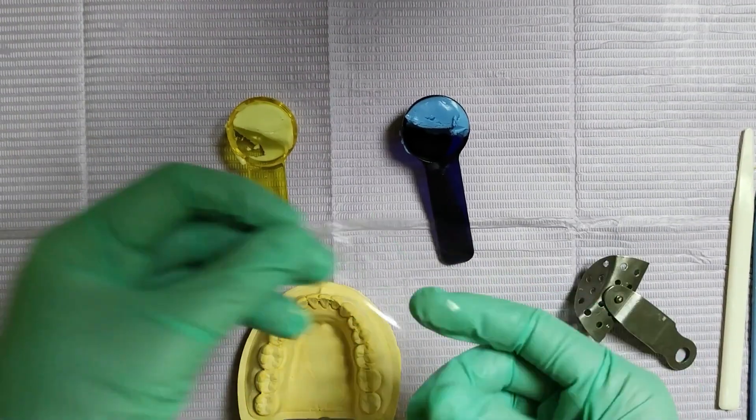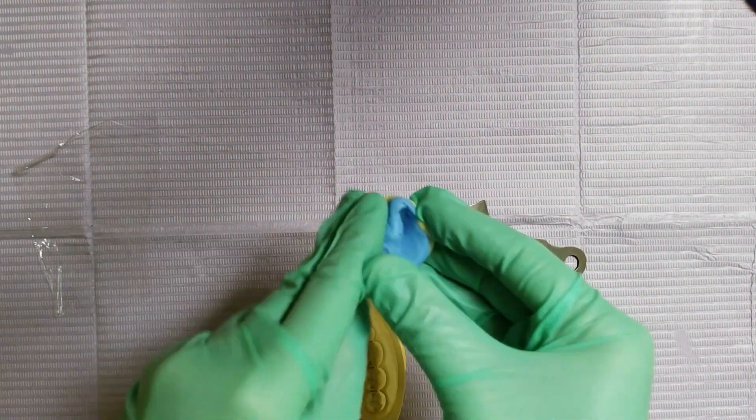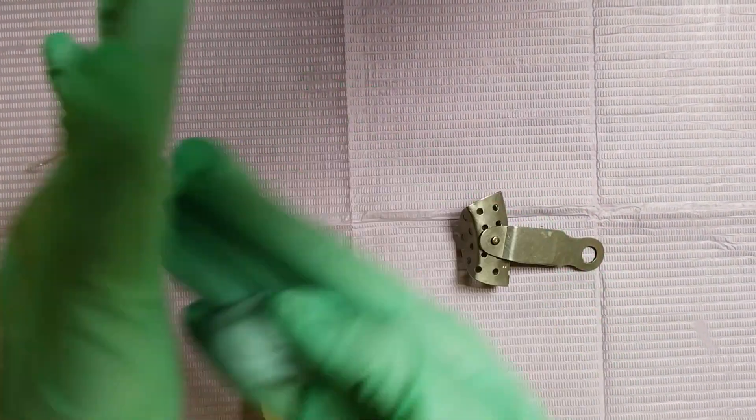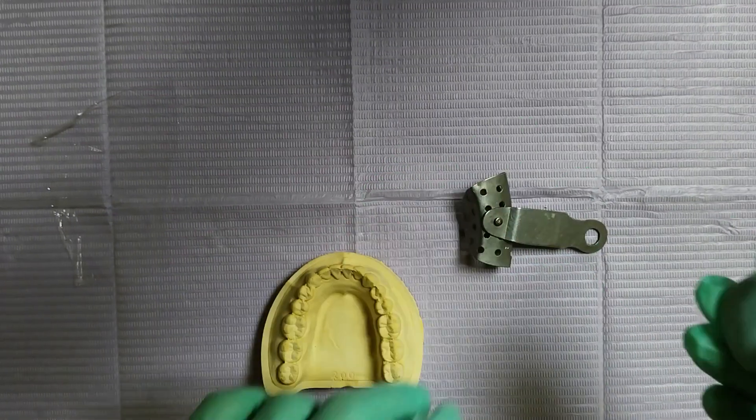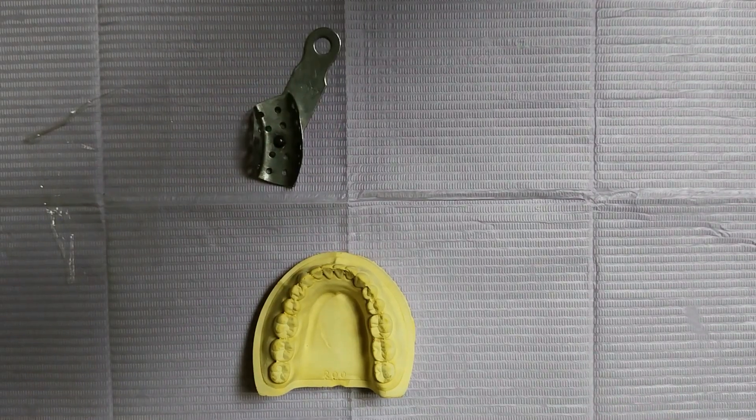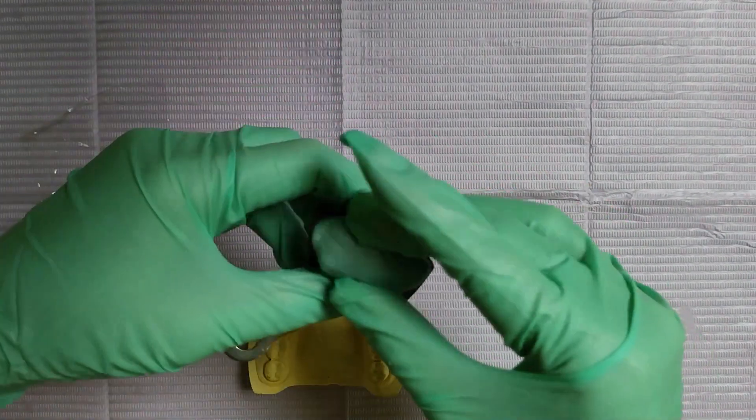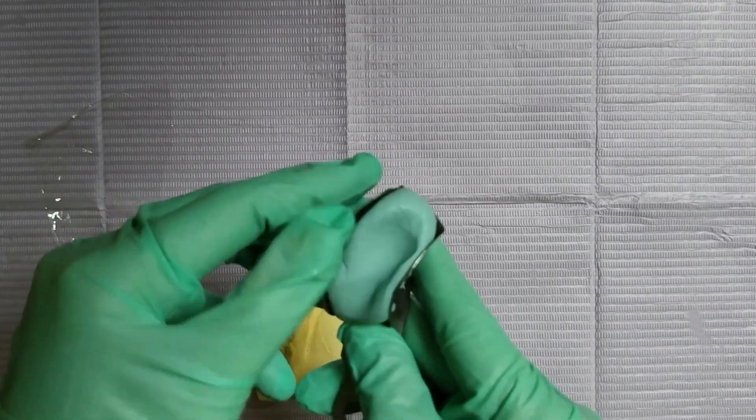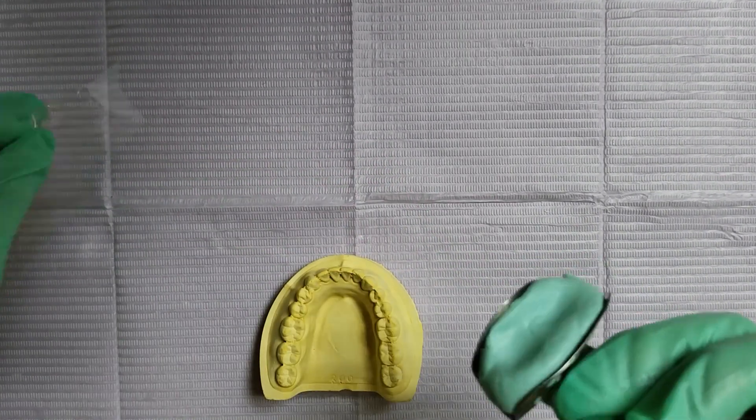Mix the putty until you get a homogeneous mixture with no streaks. You have about 30 seconds to do this. Then make a roll and place it on the tray. Make indentations for the teeth and place your spacer on it.